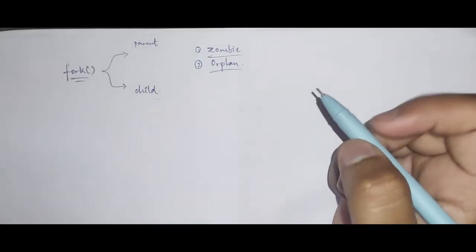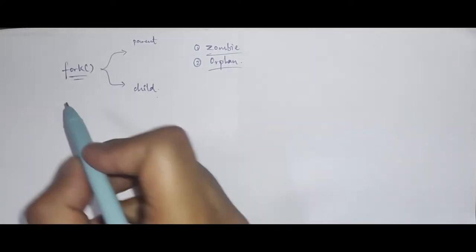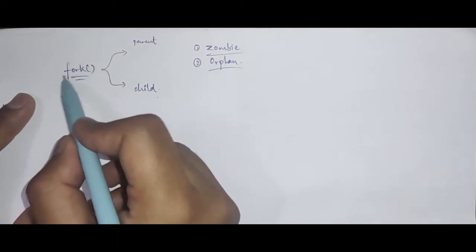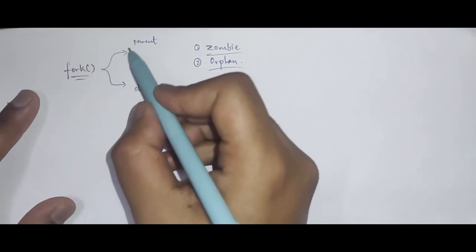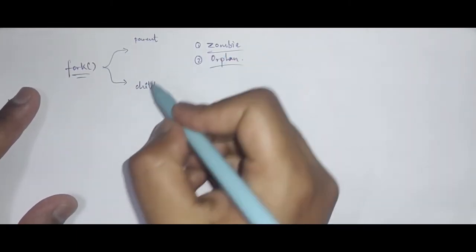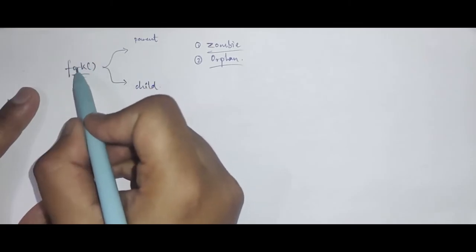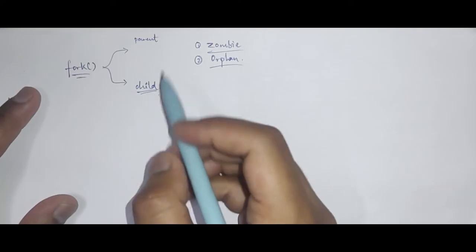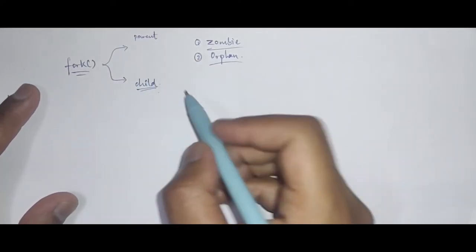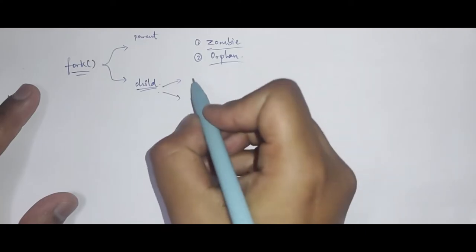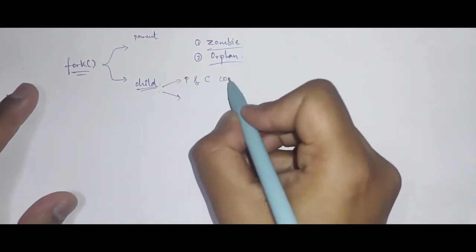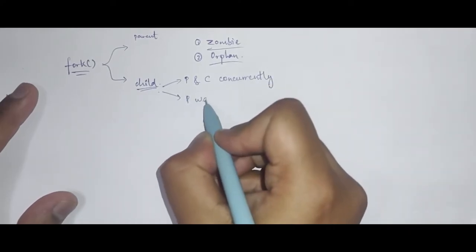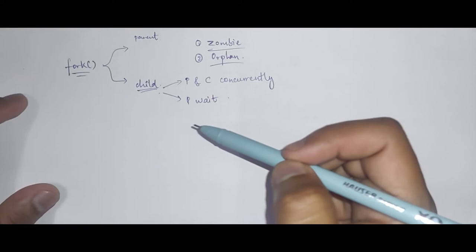Process creation in Unix-based systems is done by the fork system call. Whenever a process calls fork, two processes will be running in parallel — the original process and a newly created child process. Once the child process is created, there are two possibilities: both the parent and child can run concurrently, or the parent can wait for the child to complete.